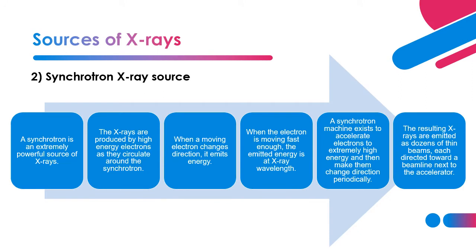Another source of X-ray is the synchrotron X-ray source. A synchrotron is an extremely powerful source of X-ray. X-rays are produced by high-energy electrons that circulate around the synchrotron. When a moving electron changes direction, it emits energy, and when an electron is moving fast enough, it will emit energy at X-ray wavelength. A synchrotron machine accelerates electrons to extremely high energy and makes them change direction periodically, resulting in X-rays emitted as dozens of thin beams.